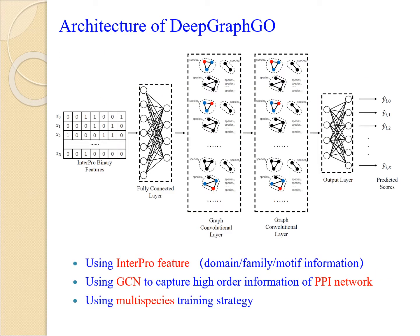This figure shows the architecture of DeepGraphGO. DeepGraphGO has two inputs: a PPI network with N proteins as graph G, and sparse binary feature vectors for N proteins. The binary feature vectors are generated by InterPro scans, where each element shows the presence or absence of a protein domain family or motif. First, the binary feature vector of each protein is transformed into a low-dimensional dense vector by a fully connected layer, to be used as the initial representation vector. The graph convolutional layer then updates the representation vector of each node to capture high-order information through graph edges by aggregating vectors from neighboring nodes.